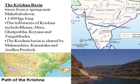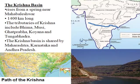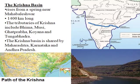Krishna originates from Mahabaleshwar, Maharashtra — there is a famous spring there. It is 1400 km long. Its tributaries are Bhima, Musi, Ghataprabha, Koyna, and Tungabhadra. The basin is shared by Maharashtra, Karnataka, and Andhra Pradesh — it flows through Telangana and Andhra Pradesh to the Bay of Bengal. Famous projects include Koyna, Tungabhadra, Srisailam, and Nagarjuna Sagar dams.